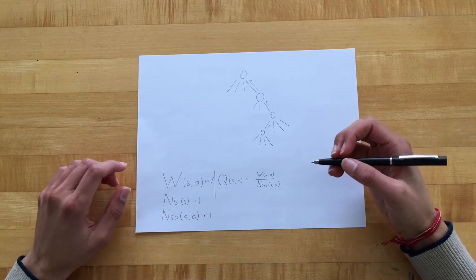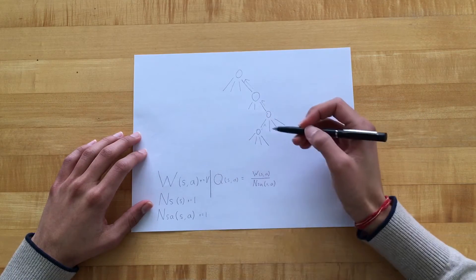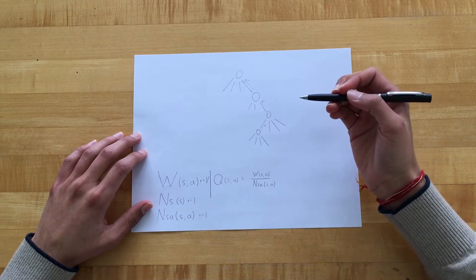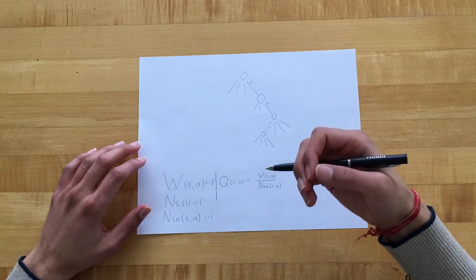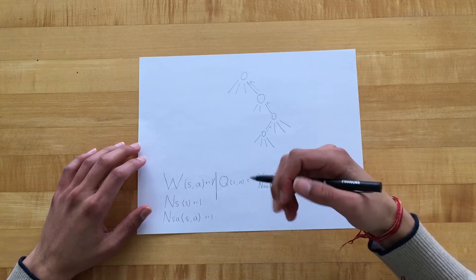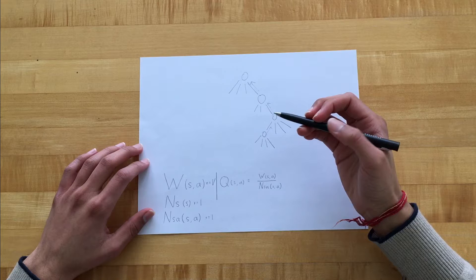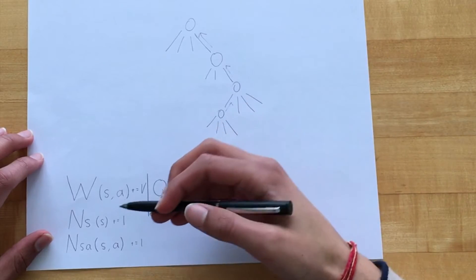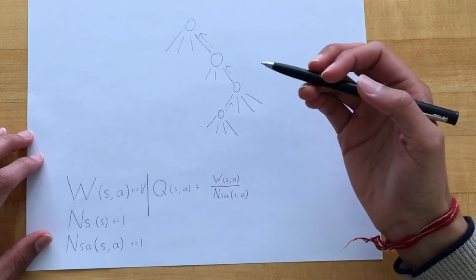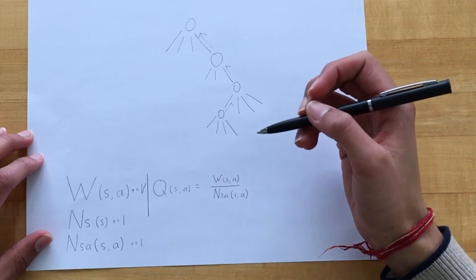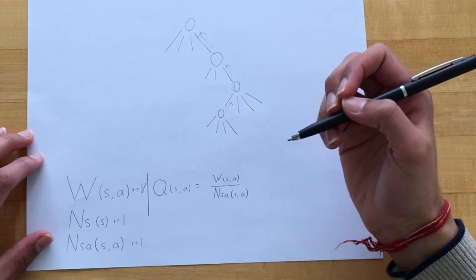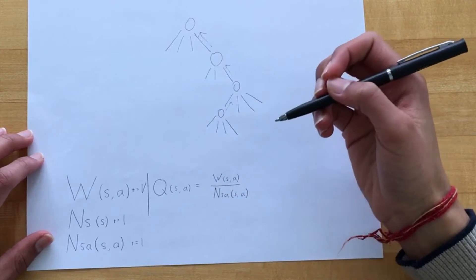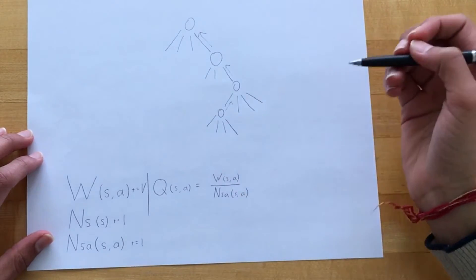So for every state-action pair, we maintain some variables here. So we add V, which is the value that was predicted for this node by the neural network, to W, which is the total amount of reward gained after taking a certain state-action pair. If instead we end up at a terminal state, meaning the game has ended, then we propagate back up the actual value of that state. N(S) and N(S,A) are incremented by one. So this is basically the amount of times that a certain state has been visited and a certain state-action pair. And the Q value of a state-action pair is recalculated by dividing the total amount of reward gained after taking the action by the number of times that the state-action pair was taken.